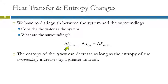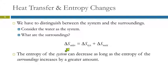The change in entropy for the universe has to be positive for a spontaneous process — it's always increasing. For any spontaneous process, the entropy of the universe increases. So the change in entropy for the universe is equal to the change in entropy for the system plus the change in entropy for the surroundings.